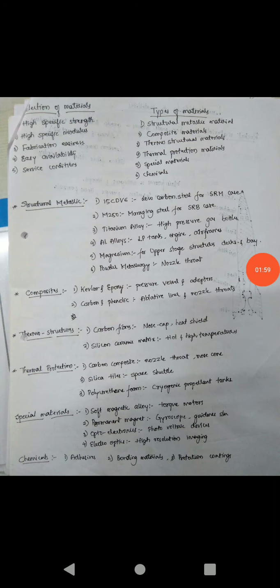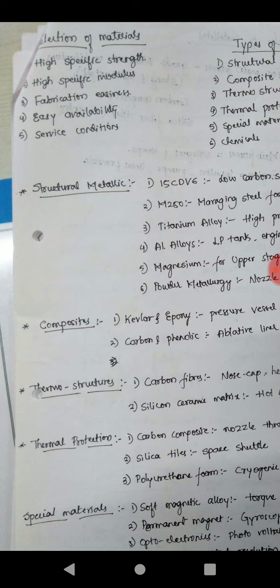Selection of these materials is based on mechanical properties like high specific strength, high specific modulus, ease of fabrication methods, material availability, and service conditions. These are the mechanical properties useful while selecting materials for satellites and launch vehicles.